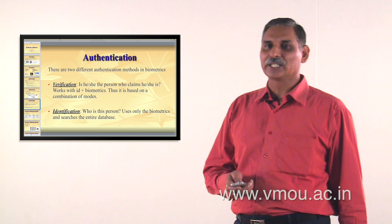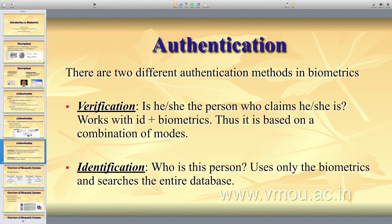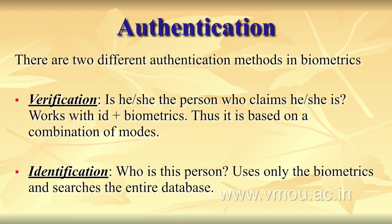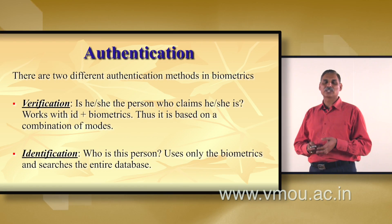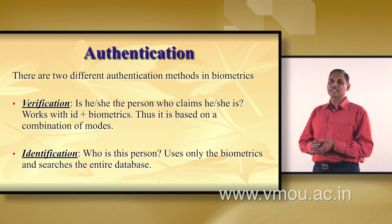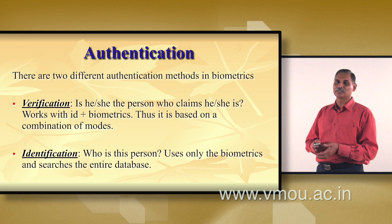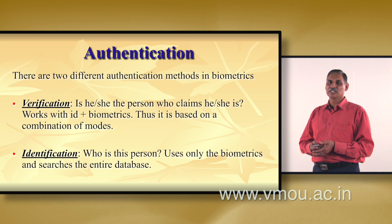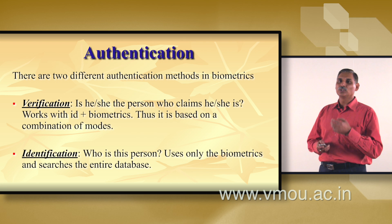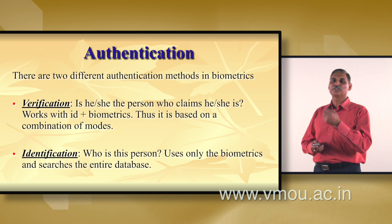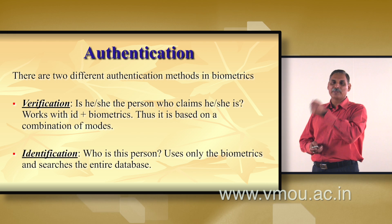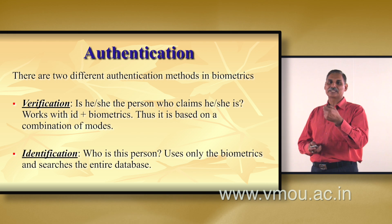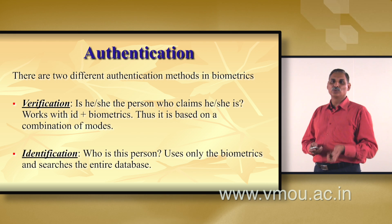There are two different authentication methods in biometrics. Verification is where the system confirms whether the person is who they claim to be, based on an ID or biometrics, using a combination mode. Identification is where the system determines who the person is using only biometrics, searching the entire database. The information about the person is matched in the database to identify the person claiming to be that individual.